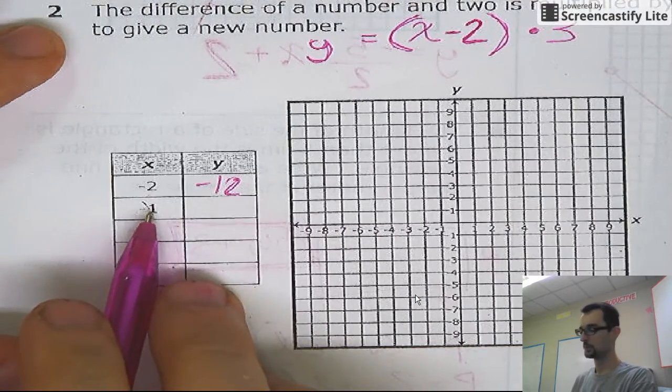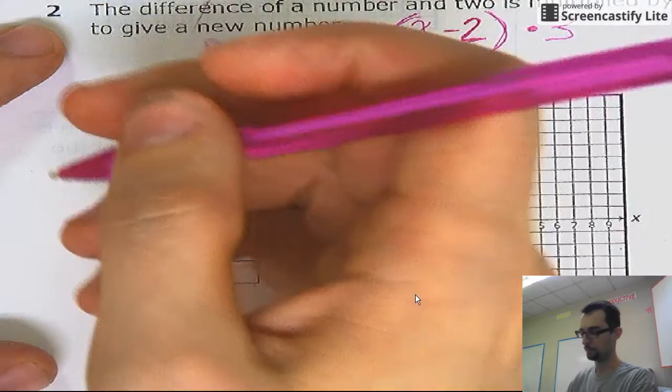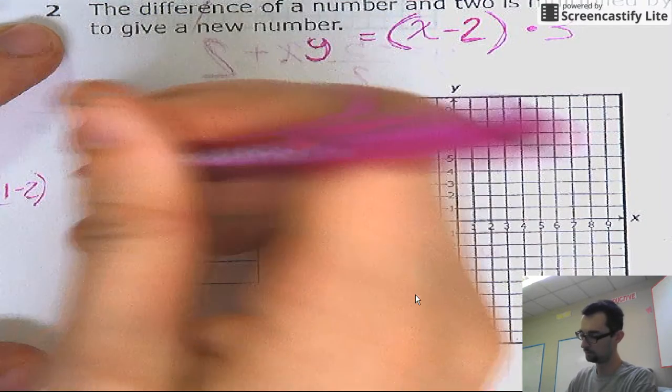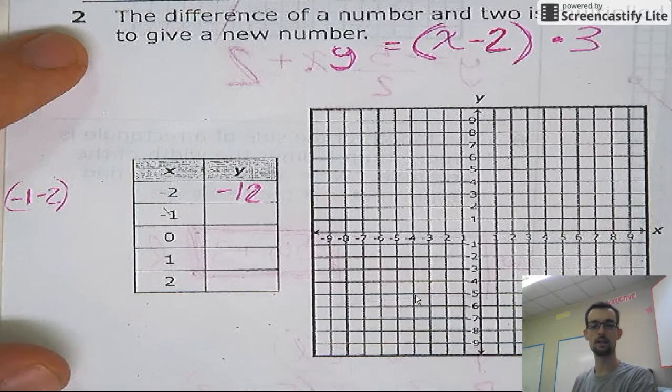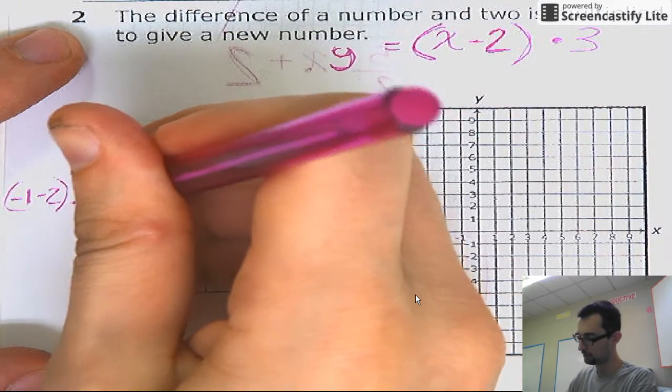All right, next one. Take a number, negative one. Subtract two from it. So negative one minus two. That gives you, let's see, that'd be negative three, right? Multiply that by three.